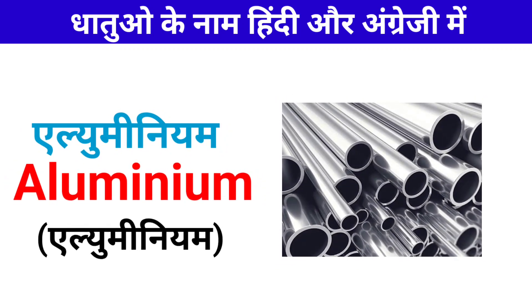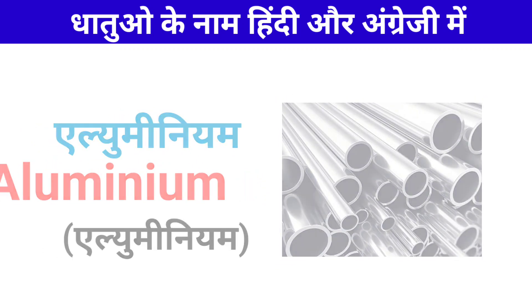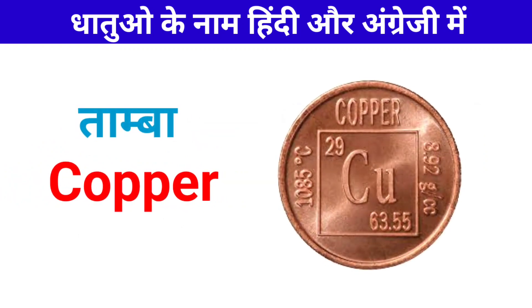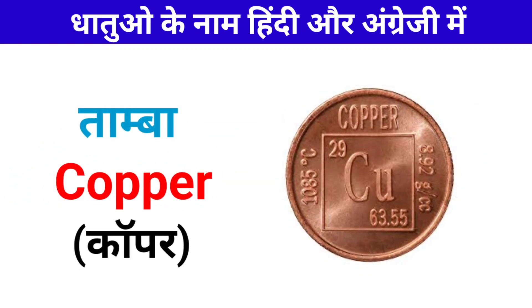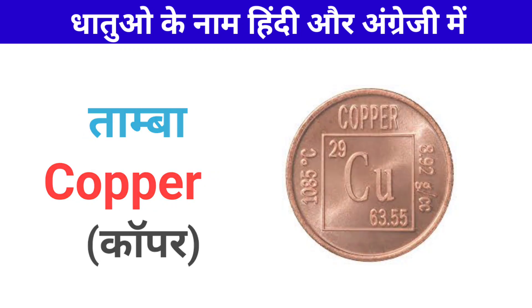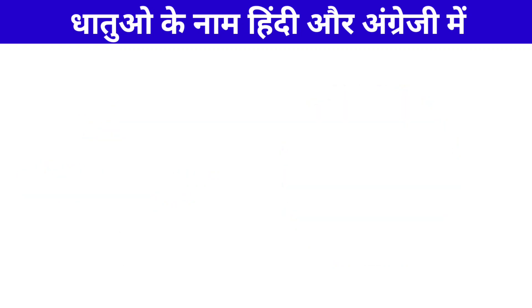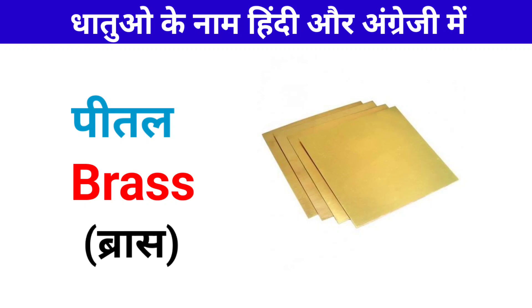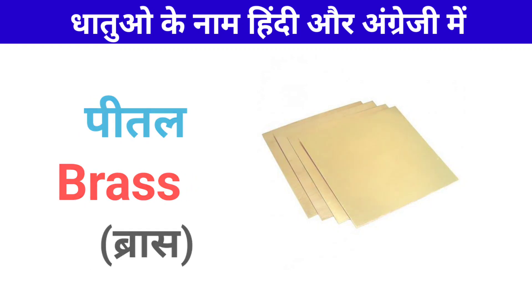Almonium — Almonium ko English me Aluminium kaha jata hai: Aluminium. Tamba — Tamba ko English me Copper kaha jata hai: Copper. Peetal — Peetal ko English me Brass kaha jata hai: Brass.